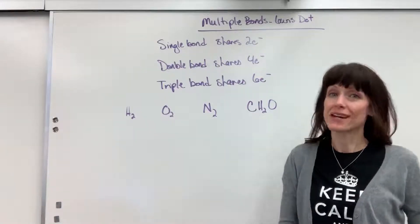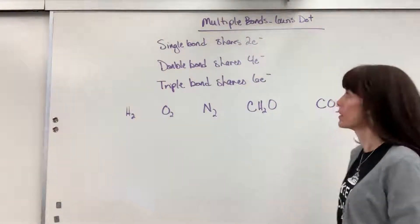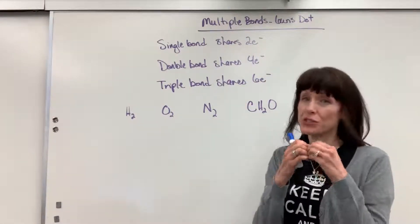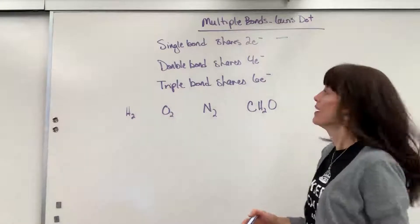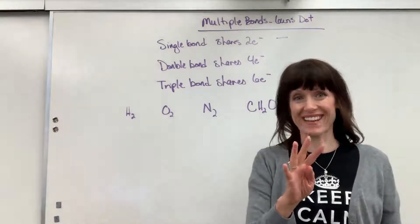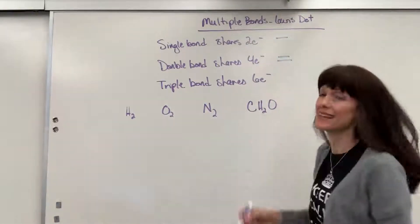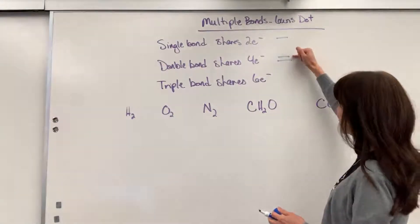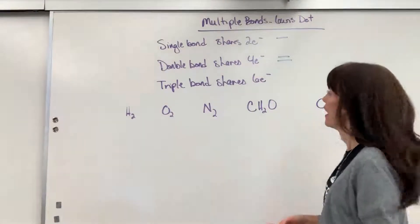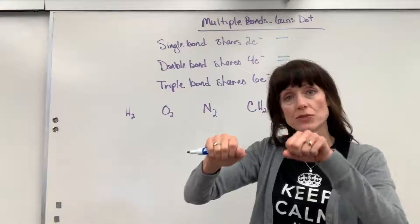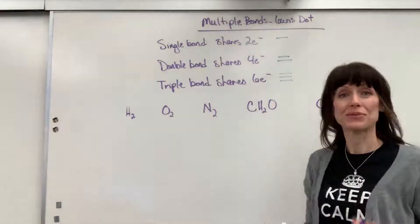Let's talk about Lewis dot structures and multiple bonds. Here's a key: when two atoms share two electrons, that's a single bond, indicated with one line. When four electrons are shared between two atoms, that's a double bond with two lines — one line indicates two electrons. A triple bond is when six electrons are shared between two atoms, shown with three lines.